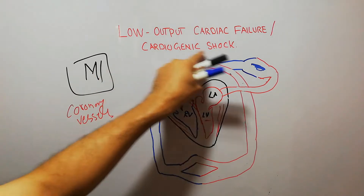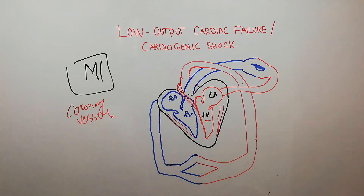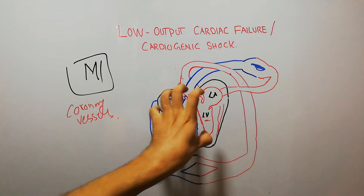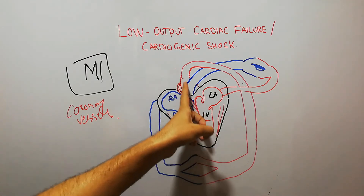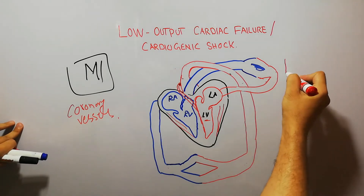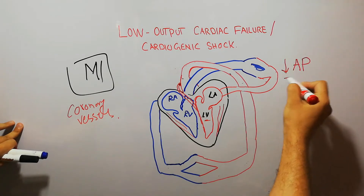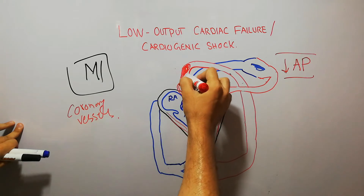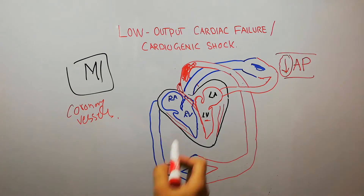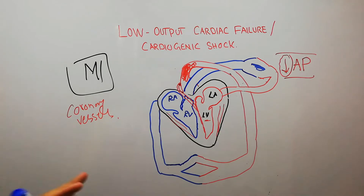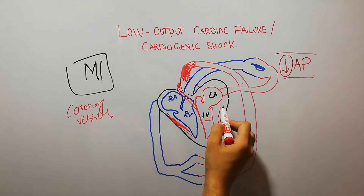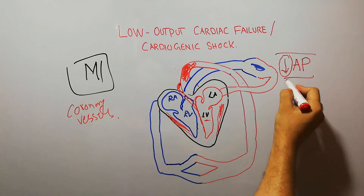We will now explain how cardiogenic shock occurs and how a vicious cycle leads to death. When the heart becomes weaker due to any reason, the amount of blood pumped into the aorta decreases, leading to a decrease in arterial pressure. When the pressure of blood in the aorta falls, the pressure in the coronary vessels — which supply the heart muscles — also decreases.